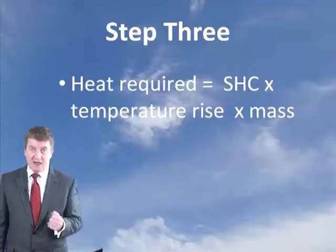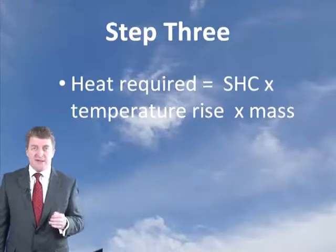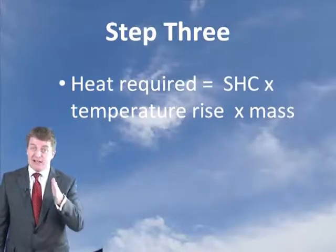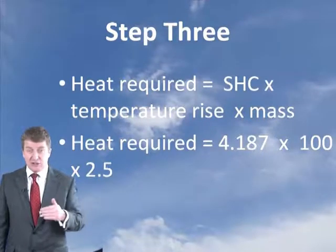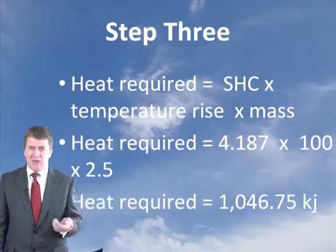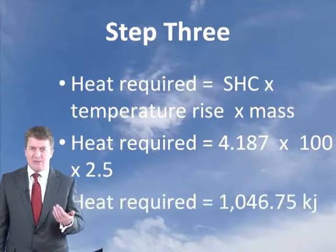Now we've turned the ice into water, we need to heat it to its boiling point — this is where the specific heat capacity of water comes in. The heat required equals specific heat capacity × temperature rise × mass: 4.187 × 100 × 2.5 = 1,046.75 kilojoules. That's step three — and we're adding all this energy together.